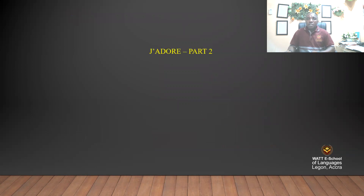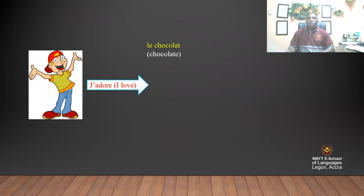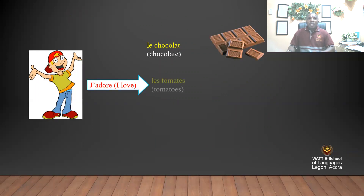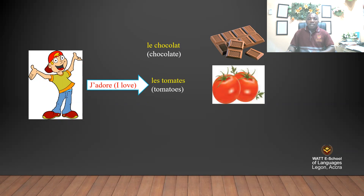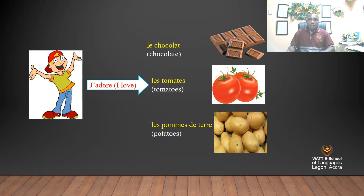J'adore means 'I love.' J'adore le chocolat — I love chocolate. J'adore les tomates — I love tomatoes. J'adore les pommes de terre — I love potatoes. Let's say together: j'adore le chocolat, j'adore les tomates, j'adore les pommes de terre.